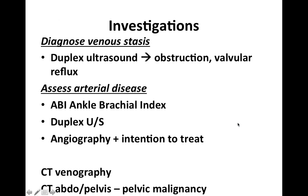In terms of investigations, you don't really need any investigations to diagnose an ulcer as it's clear on examination. However, to diagnose venous stasis, a duplex ultrasound is useful as it allows you to assess blood flow, look for obstruction, and identify valvular reflux. You also want to assess the degree of arterial disease by performing an ankle-brachial index, measuring systolic blood pressure in both arms and both legs. Duplex ultrasound is also useful for arterial disease.